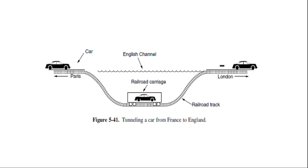At the far end, the car is let loose on the English road and once again continues to move under its own power. Tunnelling of packets through a foreign network works the same way. Tunnelling is widely used to connect isolated hosts and networks using other networks, and the network that results is called an overlay, since it has effectively been overlaid on the base network.